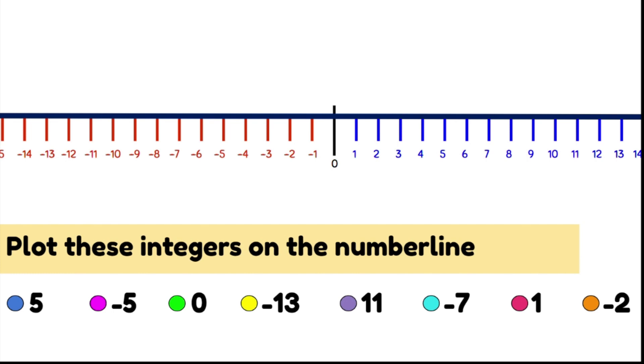Let's look at our first one now. We have five, which is positive five. We find our zero on our number line and we look to the right. We're going to do five jumps to the right to find number five.